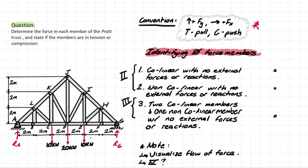The first thing we can do is look for zero force members to make our lives easier. A zero force member is basically a member that has no internal forces, creating no tension or compression within that member. I have a cheat sheet here with two points related to a joint that has two members connected to it, and one point related to a joint with three members connected.